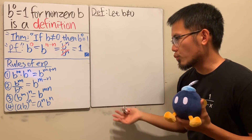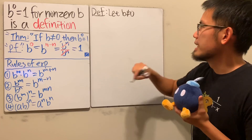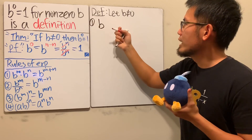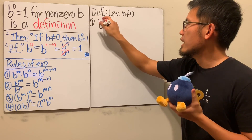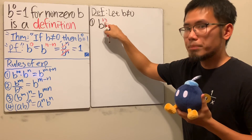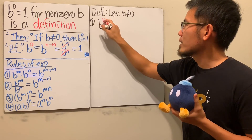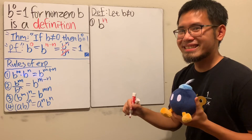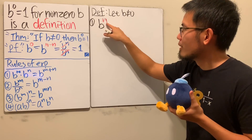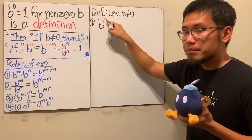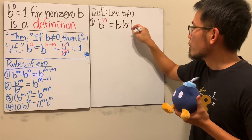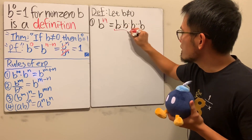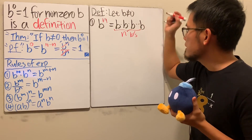Let's say b is not equal to zero — technically we should also say b is not equal to one because that's boring — but anyway, what does it mean when we have b to the nth power? This is called the power or the exponent. Well, it depends on what n is. If n is a positive whole number, this means we write down b multiplied by itself n times, for a total of n b's.